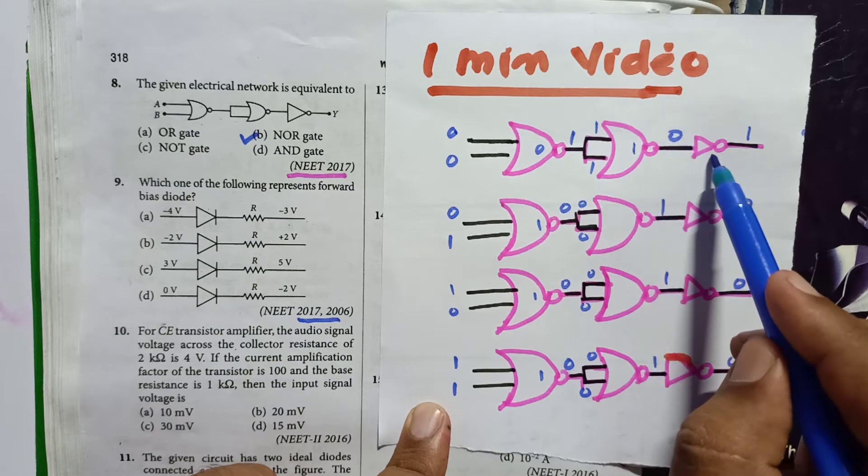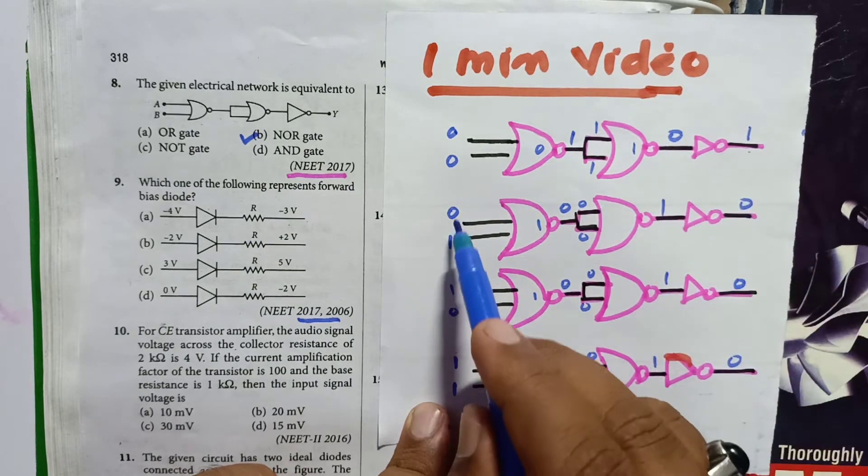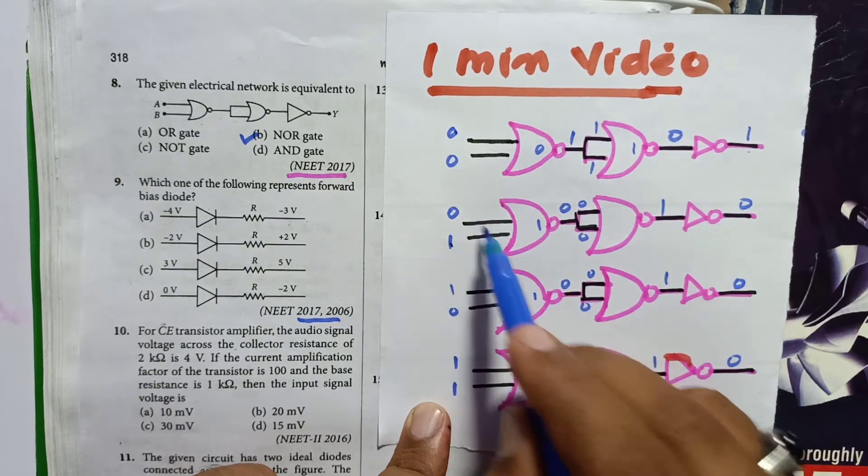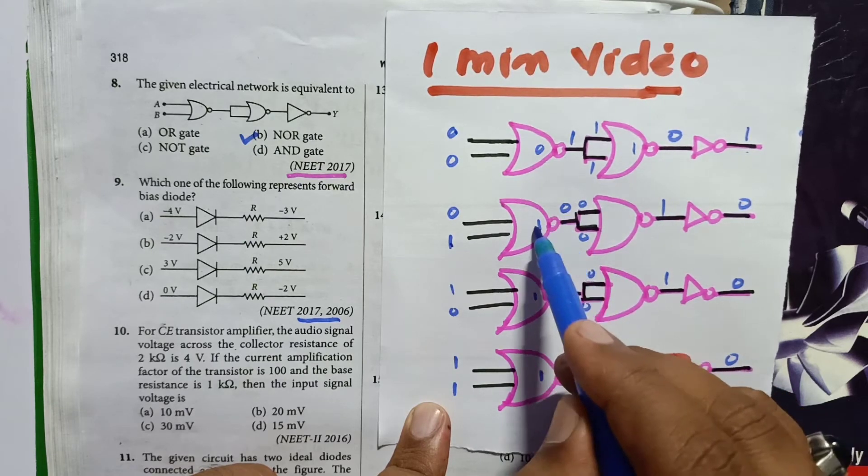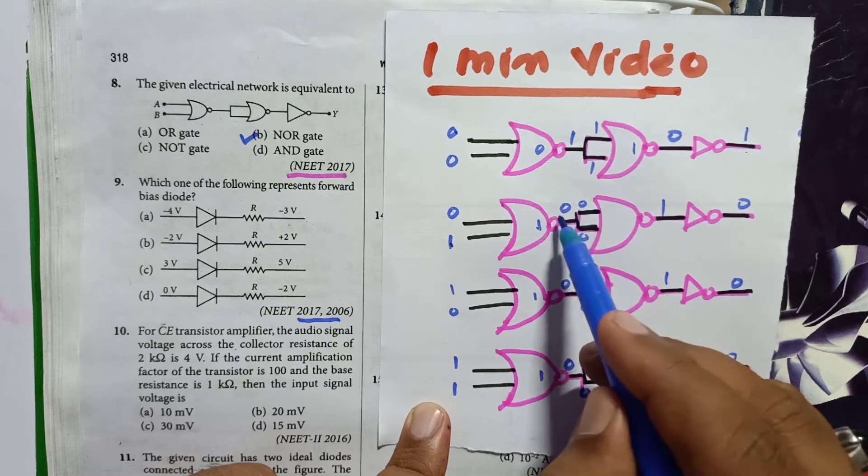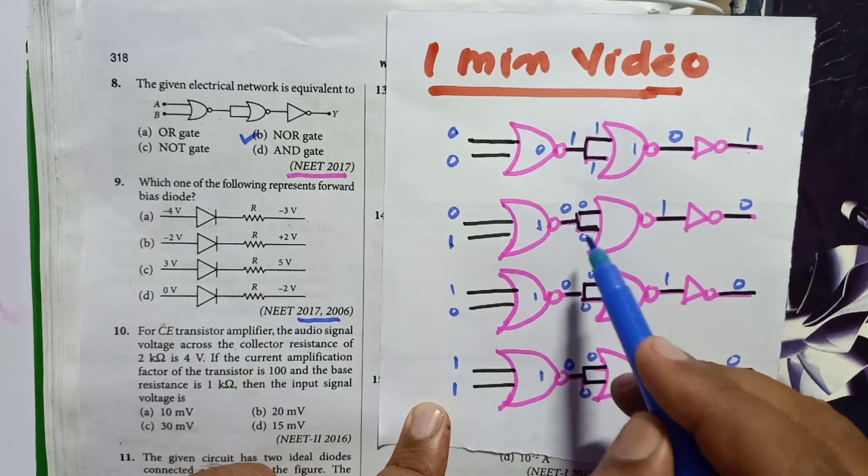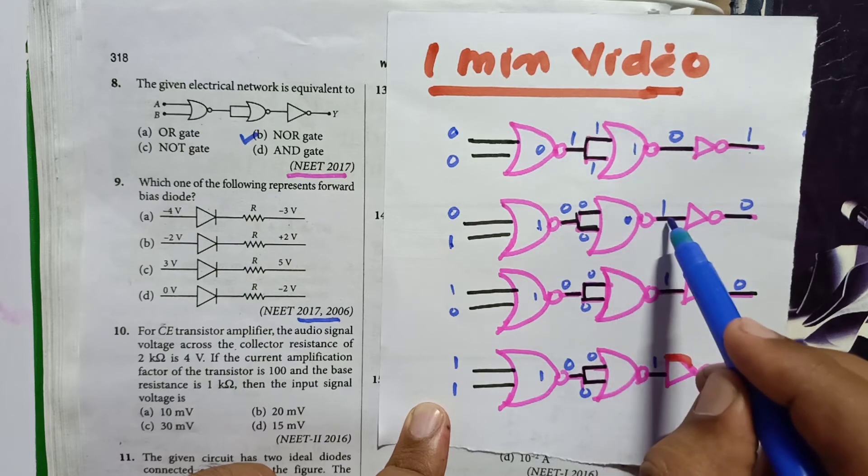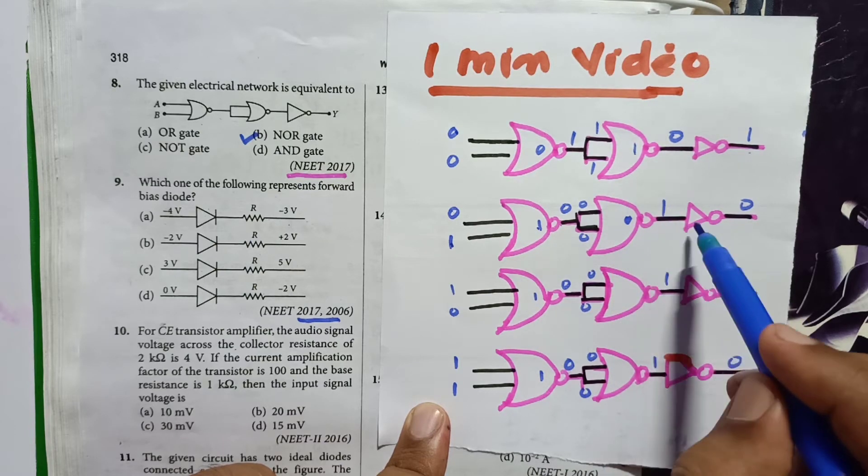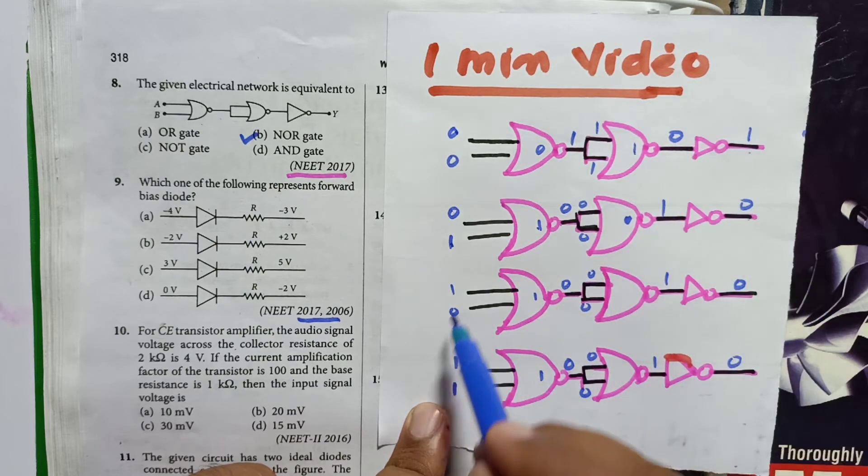So this is 0 means after crossing NOT gate will become 1 here. So this is 0, 1, so 0 plus 1 is 1. So as this is 1, here bubble is there, outside the bubble it will become 0. If this is 0, these two terminals are same, so 0 and 0. So 0 plus 0 is 0, after crossing the bubble it will become 1. So this 1 after NOT gate will become 0 here.